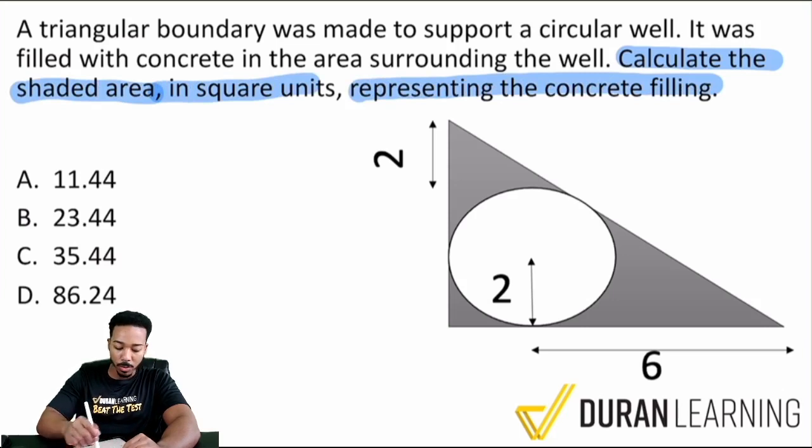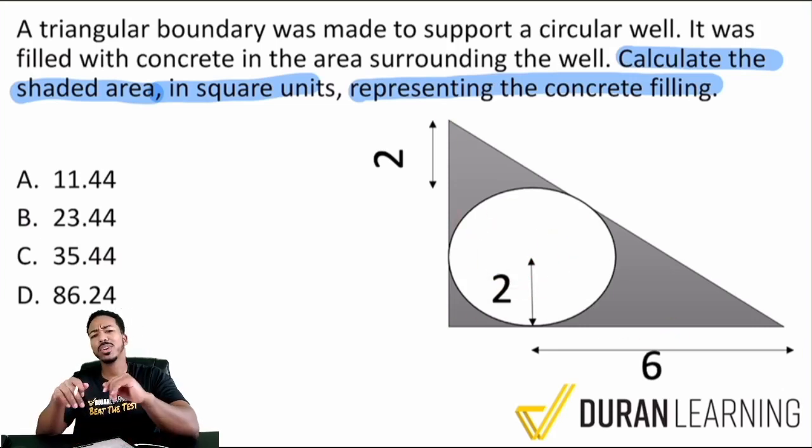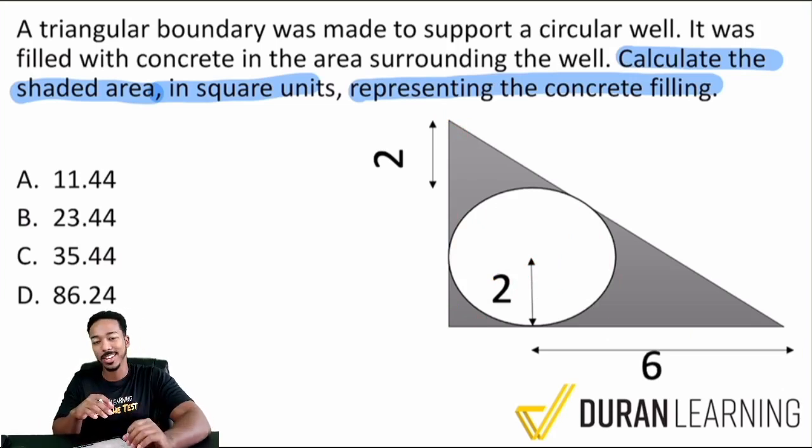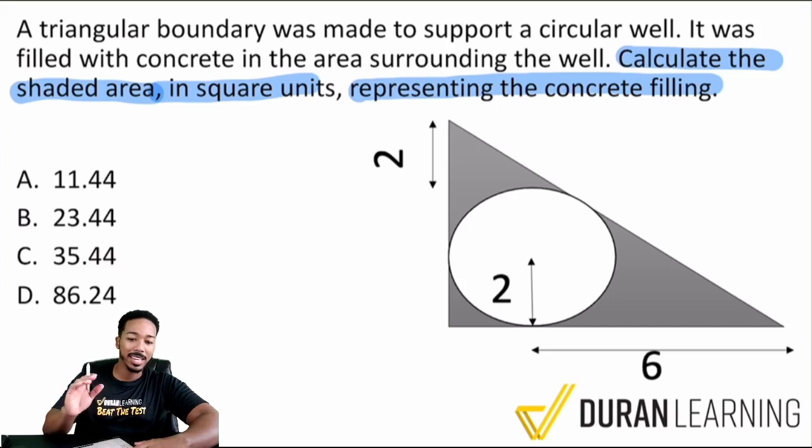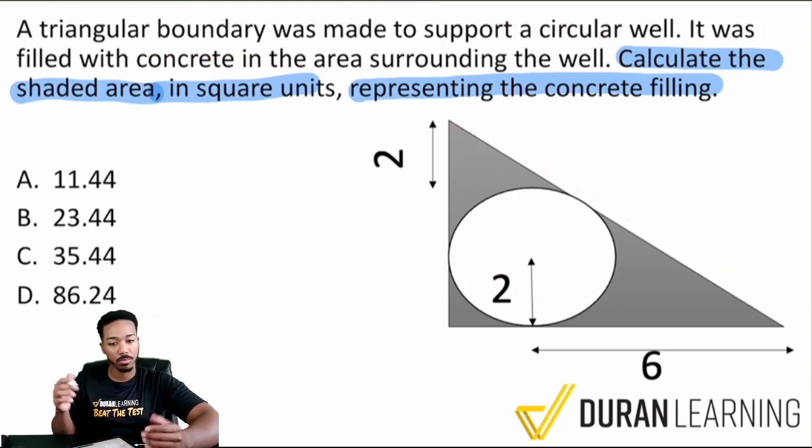So we see here that we're trying to calculate the shaded area. We're not trying to calculate this right here. It kind of looks like we have a triangle and then we're taking out this circular piece, right? So we're going to keep things simple before we get into all the formulas and all that stuff. So let's go ahead and pay attention here because again, it's going to start simple, but we are going to throw in those ideas. So a triangular boundary was made to support a circular well. It was filled with concrete in the area surrounding the well. So this is a well and this is the concrete that's surrounding it.